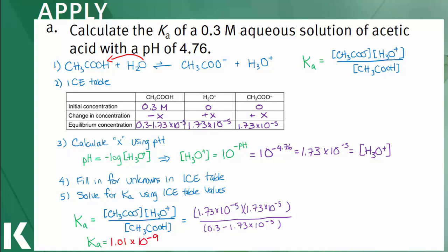So a Ka of 1.01 × 10⁻⁹ represents the relative ratio of products over reactant at a pH of 4.76 and a molarity of 0.3 M for acetic acid.